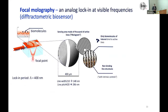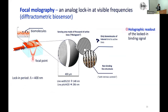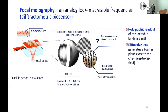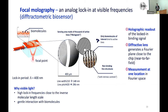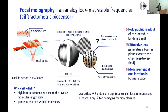This brings us to focal monography — a biosensor that implements all these principles. A laser beam is guided by a waveguide, hits a diffractive lens structure, and we force the analyte to bind in an ordered structure on our surface. By measuring the intensity diffracted into the focal point, you can directly back-calculate how many molecules have bound. Anything that happens uniformly or randomly — or when you rotate the structure 90 degrees — doesn't generate a signal, so you don't see it. The locking period is small, and visible light is already close to this molecular length scale.